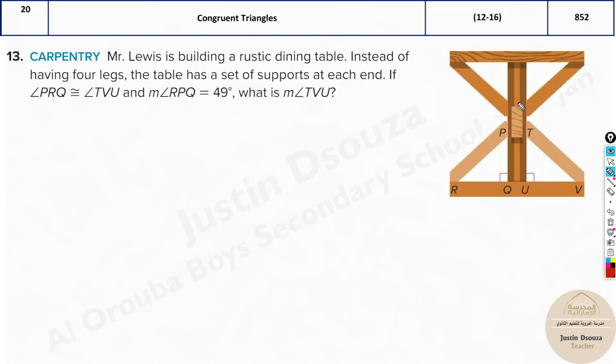Mr. Lewis is building a rustic dining table. Instead of having four legs, the table has a set of supports at each end. If angle PRQ is equal to angle TVU, and angle RPQ is given to be 49 degrees, and we also know this equals 90 degrees, what is the measure of angle TVU?